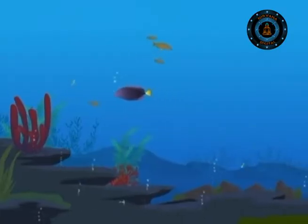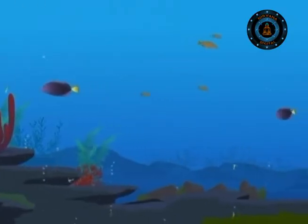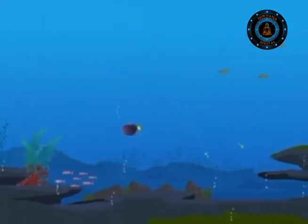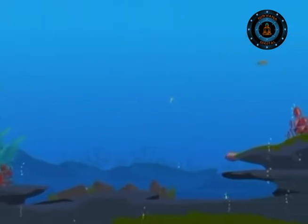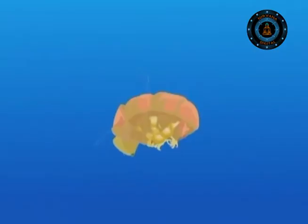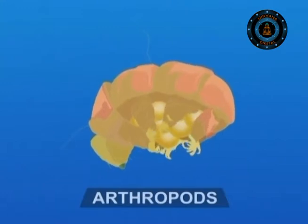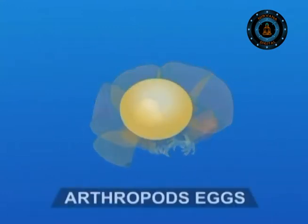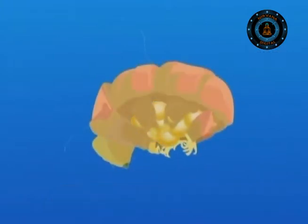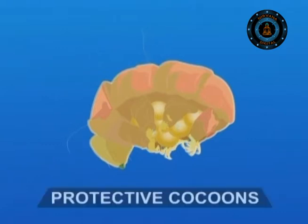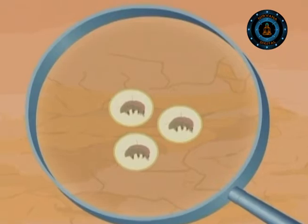Life in freshwater is full of uncertainties and these animals have to deal with it to survive and multiply. These creatures follow a trick: they have the ability to produce eggs that resist drying and are also capable of sealing up their whole bodies in temporary but protective cocoons. In the event of a pond or stream drying up, these small creatures survive using these tricks.